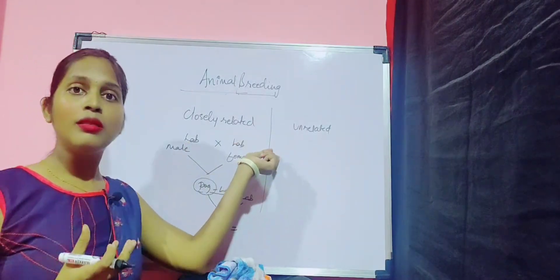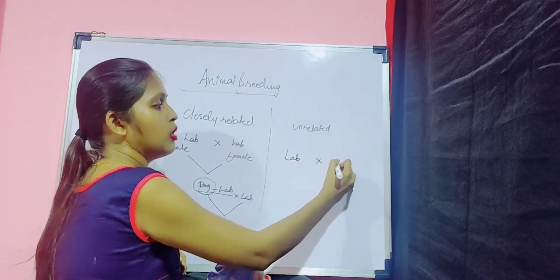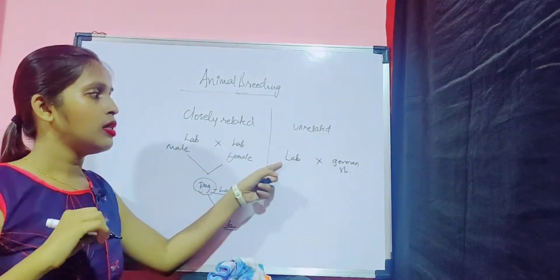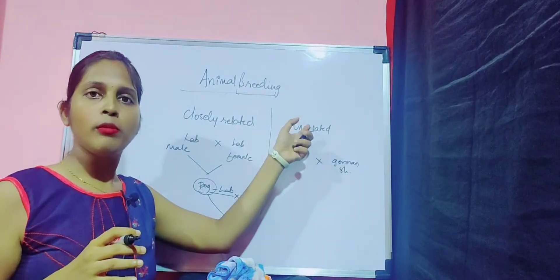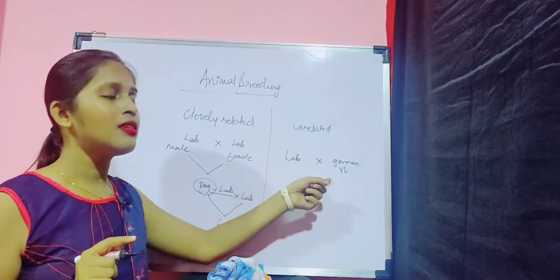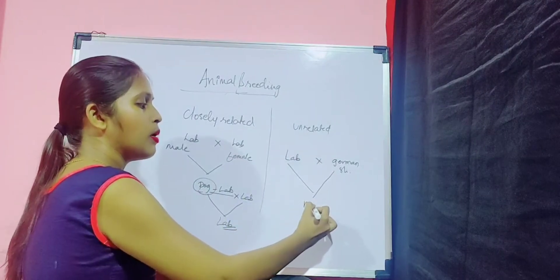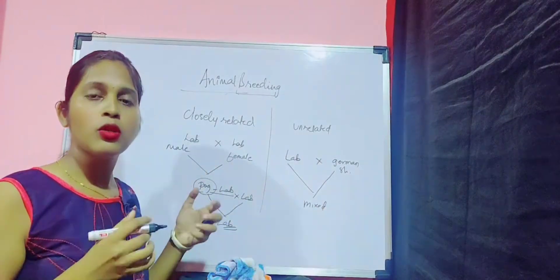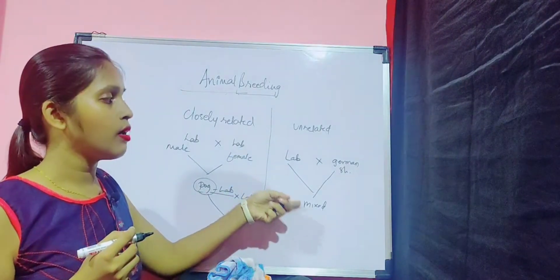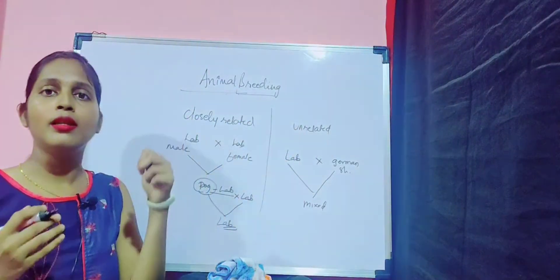Unrelated means there is one Labrador and there is a German Shepherd. Though both are dogs, their ancestors are not the same. Mating these two gives a mixed breed, and this mixed breed does not have a common ancestor. We will discuss unrelated and closely related in more detail.